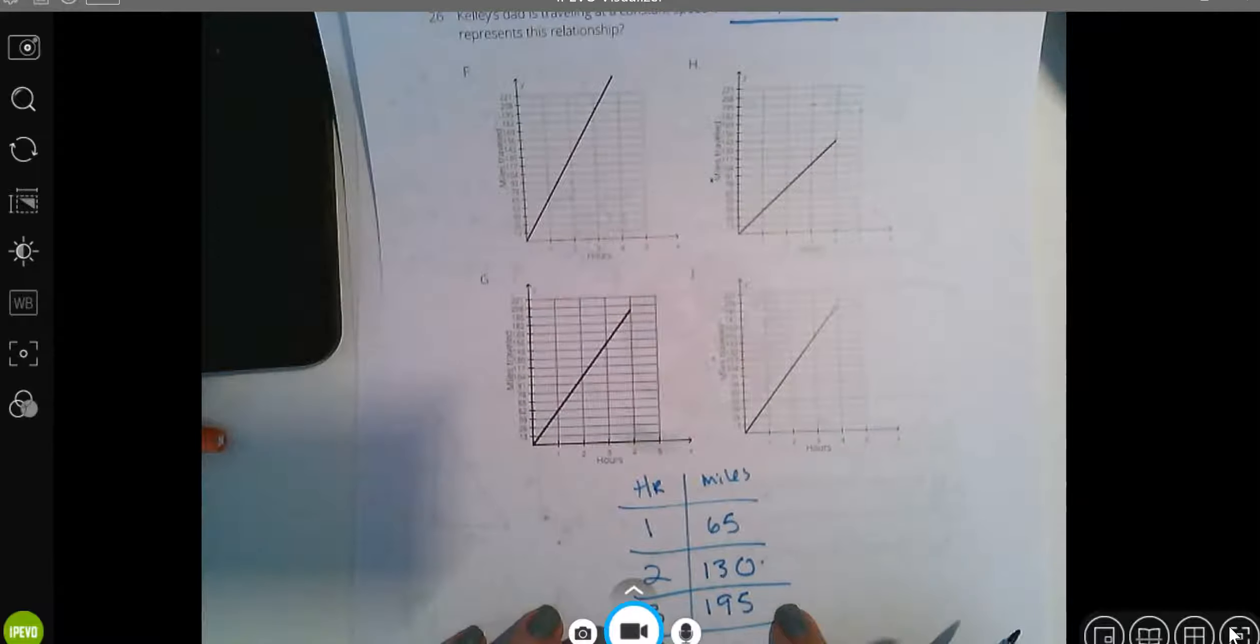Kelly's dad is traveling at a constant speed of 65 miles per hour. Which graph best represents this relationship? Hours are on my x-axis. 65 miles per hour means that in one hour, her dad drove 65 miles. In two hours, he would have gone 130 miles. In three hours, he'd have gone 195 miles. I think that's probably enough for us to check. One hour and 52 miles. Nope. One hour and 52 miles. Nope. One hour and 30-ish miles. Nope. One hour and 60. Whoa, I didn't even need that work. Ta-da.